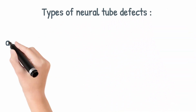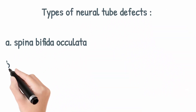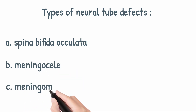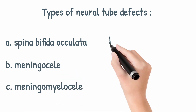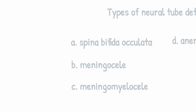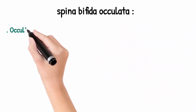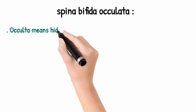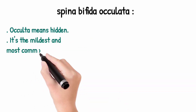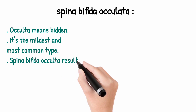Types of neural tube defects include spina bifida occulta, meningocel, meningomyelocel, and anencephaly. What is spina bifida occulta? Occulta means hidden. It is the mildest and most common form of neural tube defect.